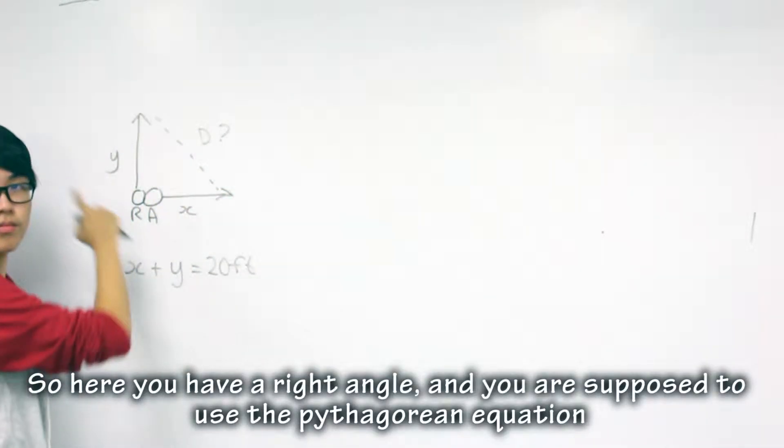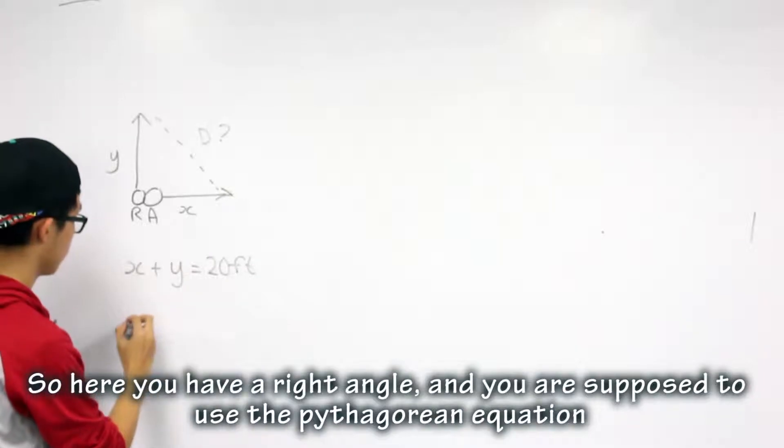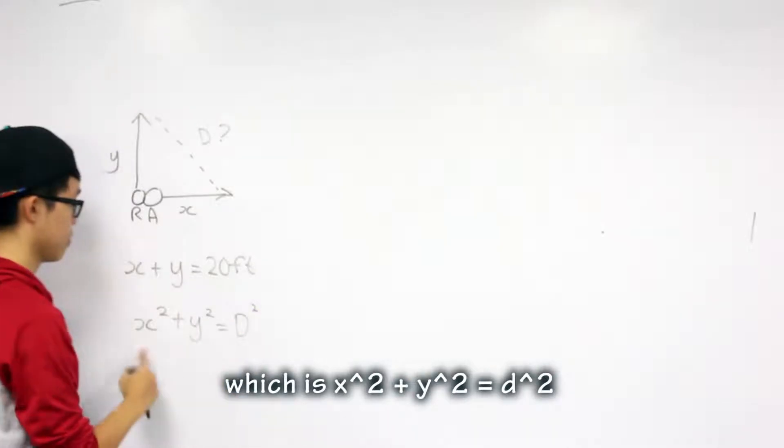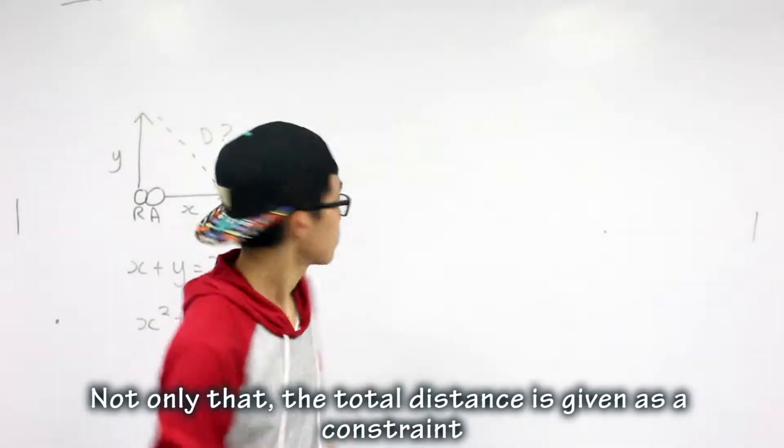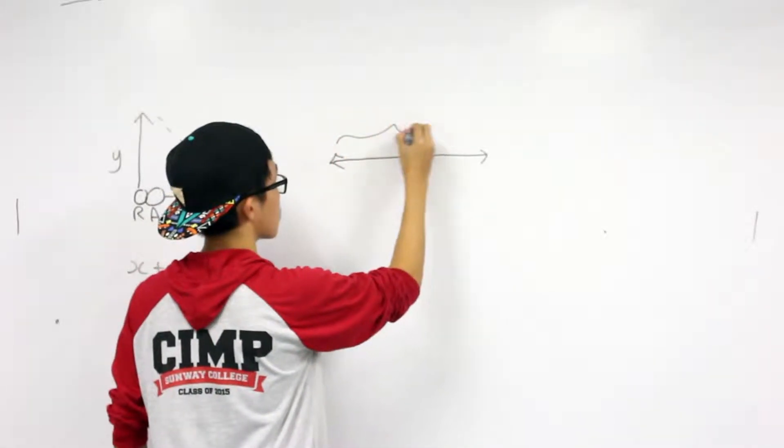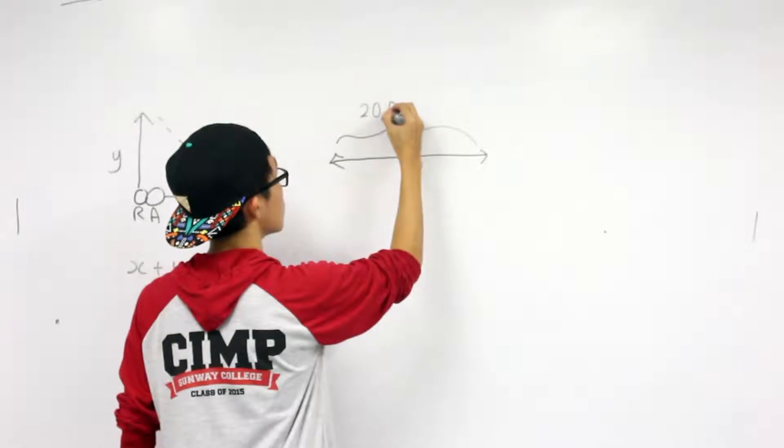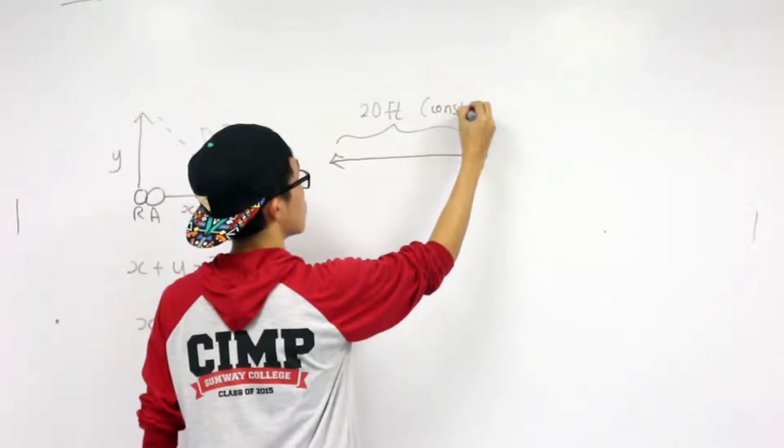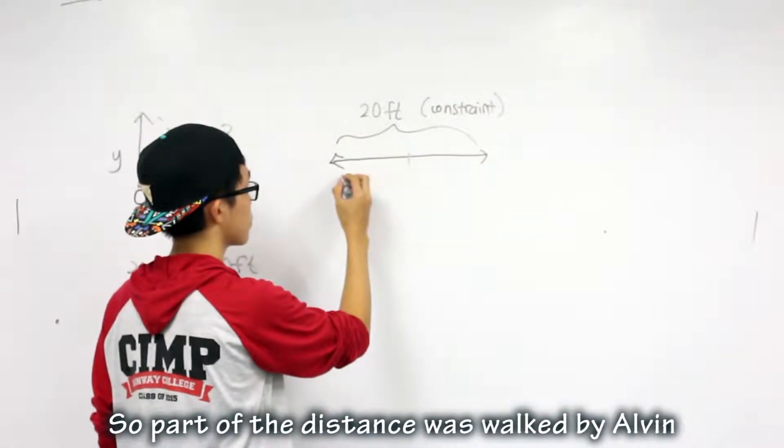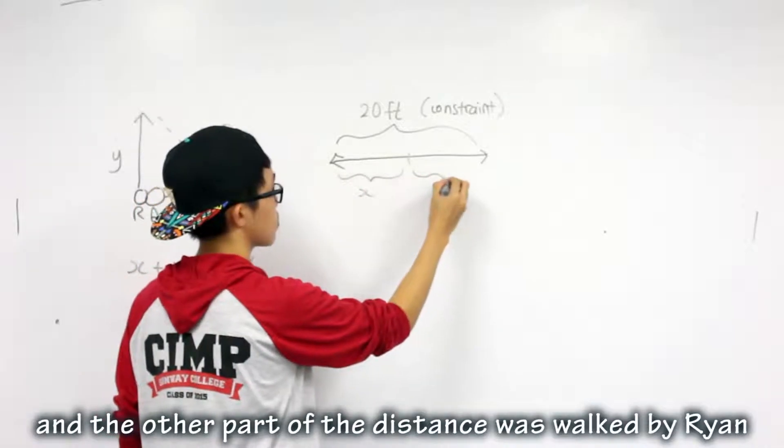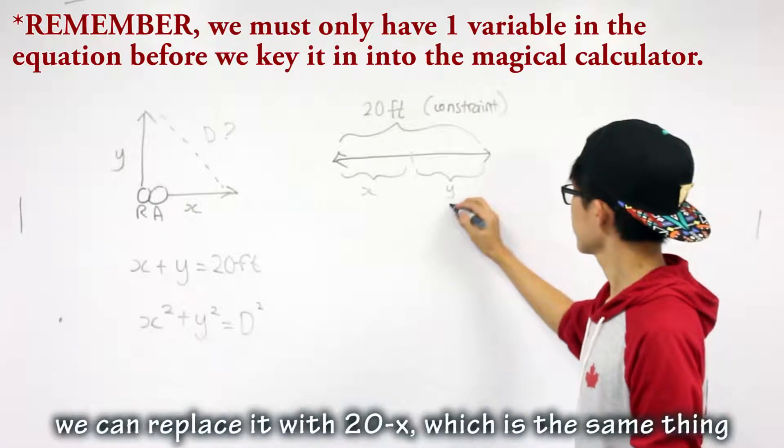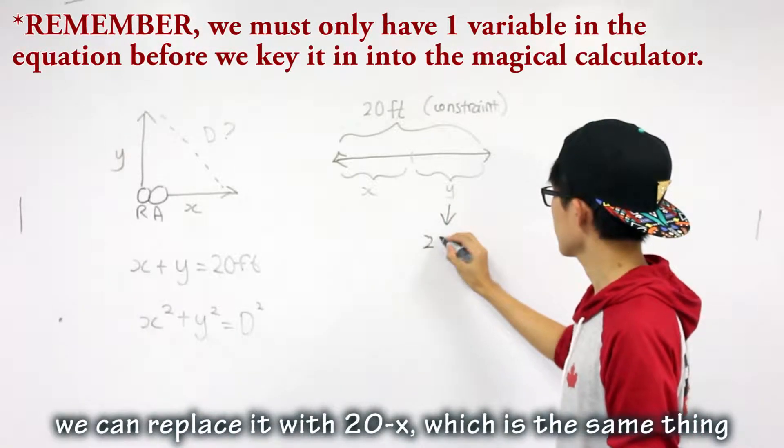So here you have a right angle and you are supposed to use the Pythagorean equation to find the distance, which is x² plus y² equals d². Not only that, the total distance is given as a constraint, which is 20 feet. So part of the distance was walked by Alvin and the other part by Ryan. So instead of putting y variable, we can replace it with 20 minus x, which is the same thing.